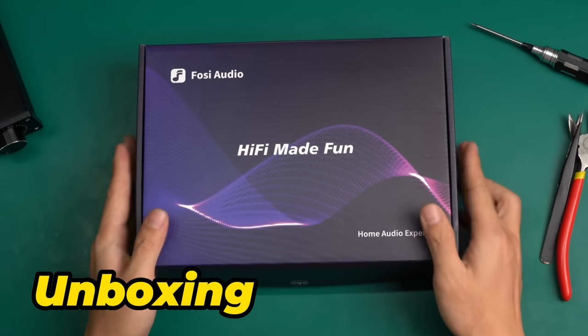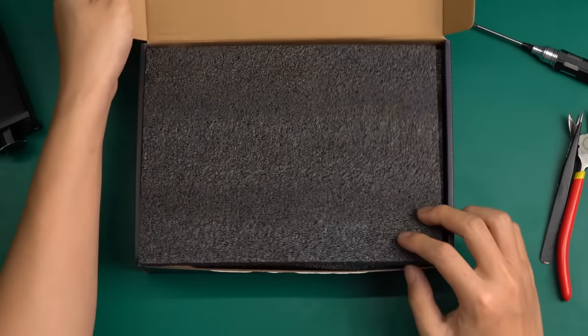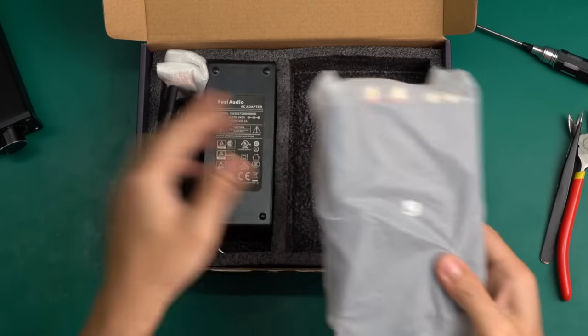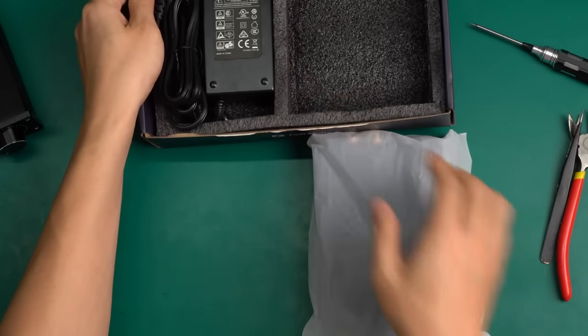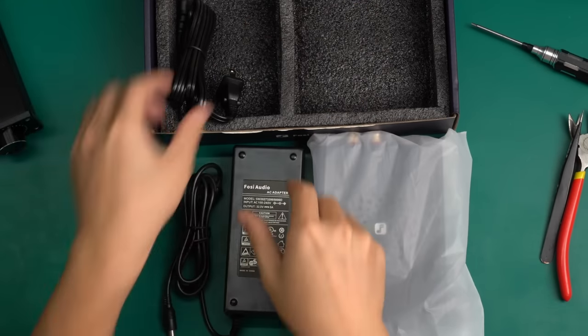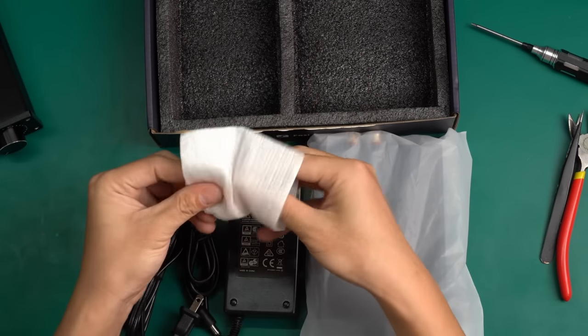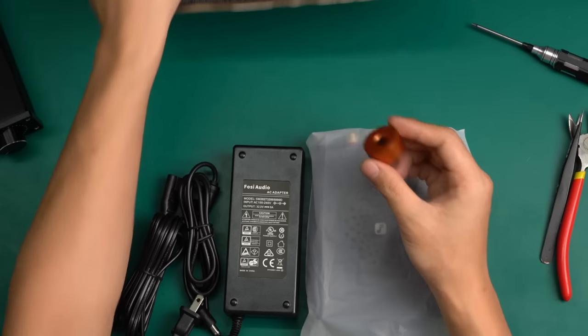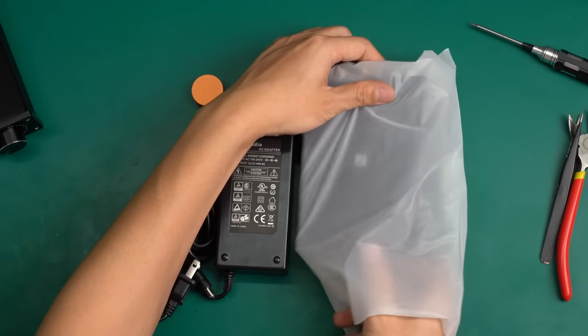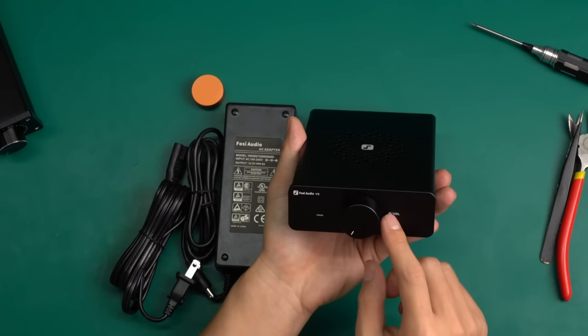First of all, let's unbox it. The packaging is quite simple. Inside the box, there's a Mini Amplifier V3 packed in an anti-static bag, a power adapter, and a copper knob, or to be precise, it should be orange. Fossi Audio states that this orange knob is an optional accessory. You can add it to your order if you like this color.